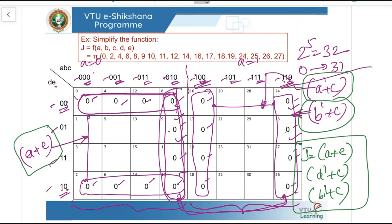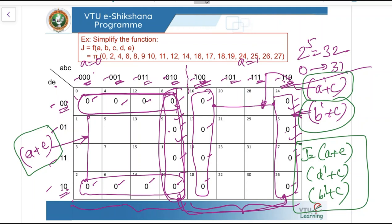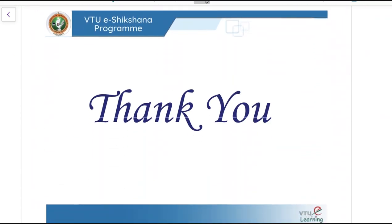We have seen examples of how to simplify max term equations for three-variable, four-variable, and five-variable K-maps. The key difference between min term and max term is that the loading is zero for max terms, whereas for min terms the loading is one. There is also a difference in how to read the K-map and write the expression.